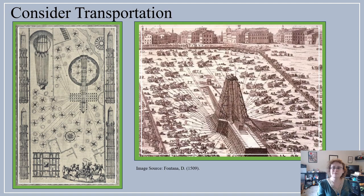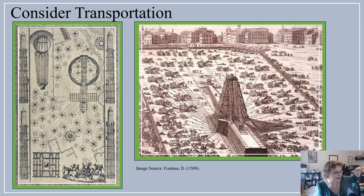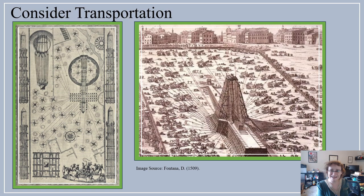Legend has it that they were so worried about causing this obelisk to fall that the Pope at the time issued a unique decree: silence was legally required of spectators during the final raising, punishable by immediate summary execution. If you so much as uttered a word and you weren't one of the people directing the workers, you were by order of the Pope himself ordered to be executed. And just for fun, this was an obelisk that used to belong to the Emperor Caligula — and they did give Caligula's obelisk a literal exorcism before installing it. It was the 16th century after all.